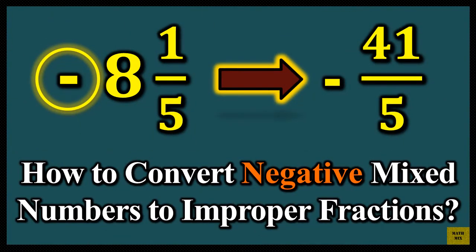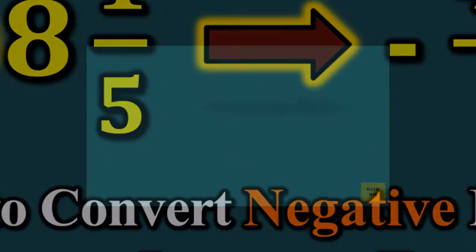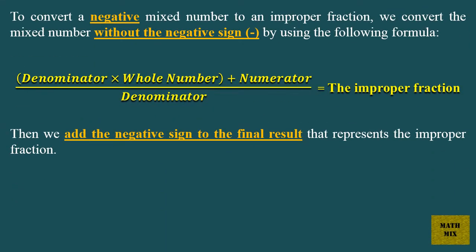How to convert negative mixed numbers to improper fractions. To convert a negative mixed number to an improper fraction, we convert the mixed number without the negative sign by using the following formula: the denominator times the whole number plus the numerator, over the denominator, equals the improper fraction. Then we add the negative sign to the final result.